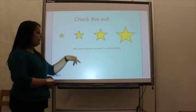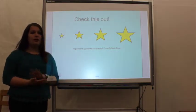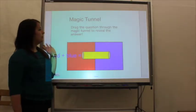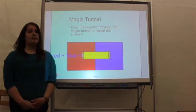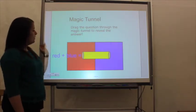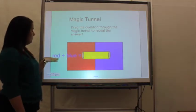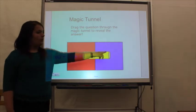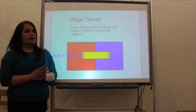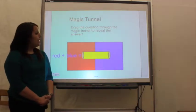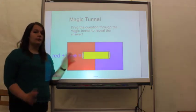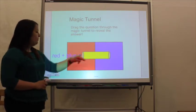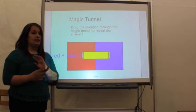On this slide I have a YouTube link to help students reinforce their ideas about the color wheel and how you can place colors together. On this next slide, I'm going to introduce the students to the magic tunnel. The directions say: drag the question through the magic tunnel — this yellow tunnel right here — to reveal the answer. Students will click on where it says 'red plus blue equals,' drag it through the tunnel, and the answer will be revealed on the other side. The background colors reinforce the visual colors, and they can see the result written in the correct color.